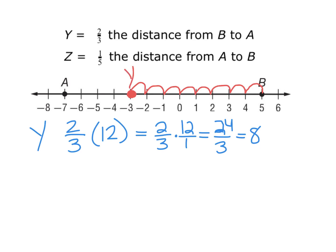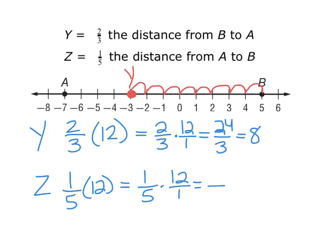Now for Z, Z is one-fifth of the distance. I'll go through the same process of multiplying my total distance of twelve by one-fifth — numerators times numerators, denominators times denominators — giving me twelve divided by five. Instead of leaving it like that, I'll go ahead and do that division.